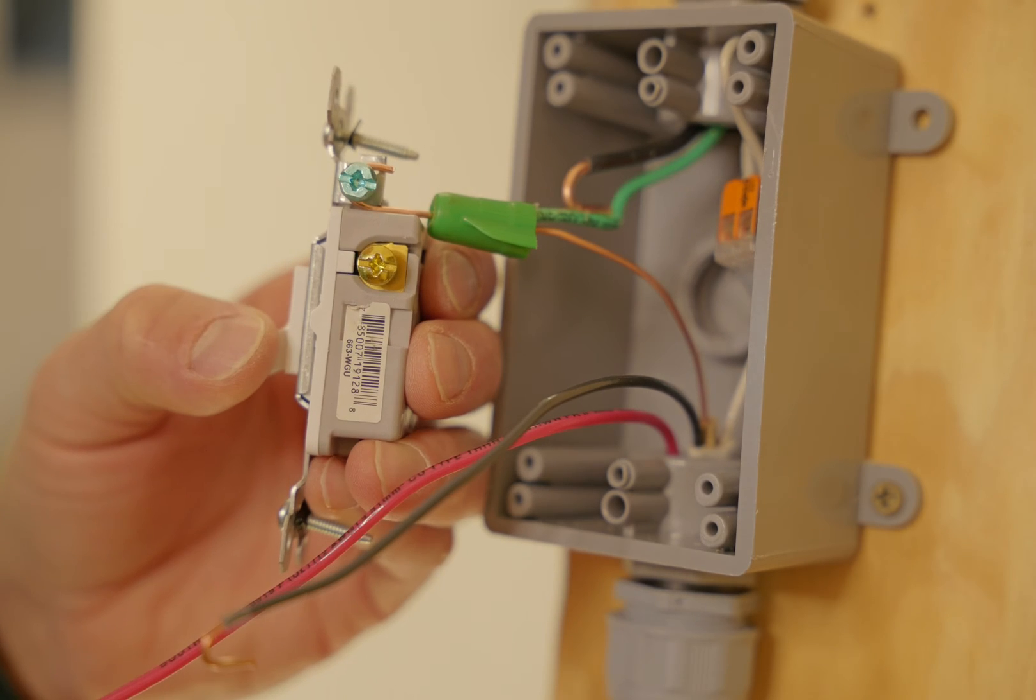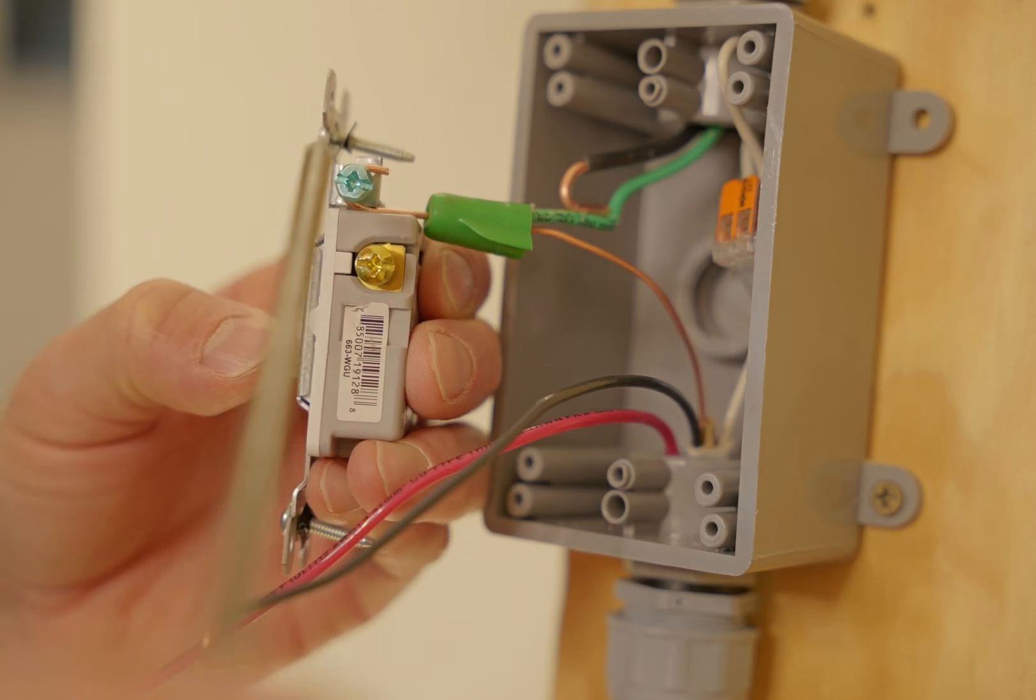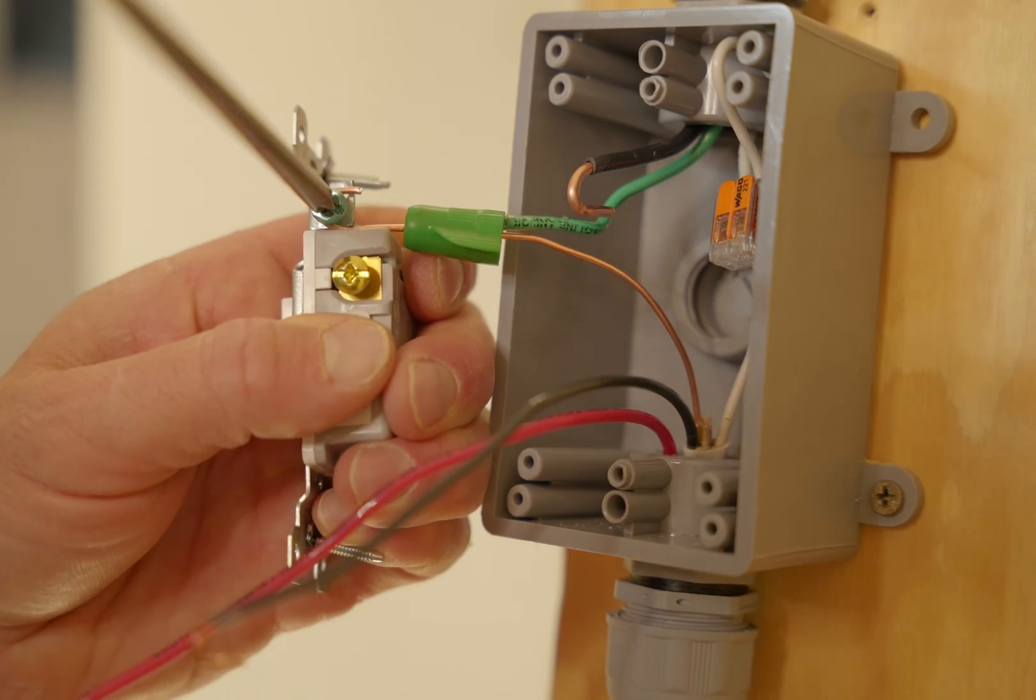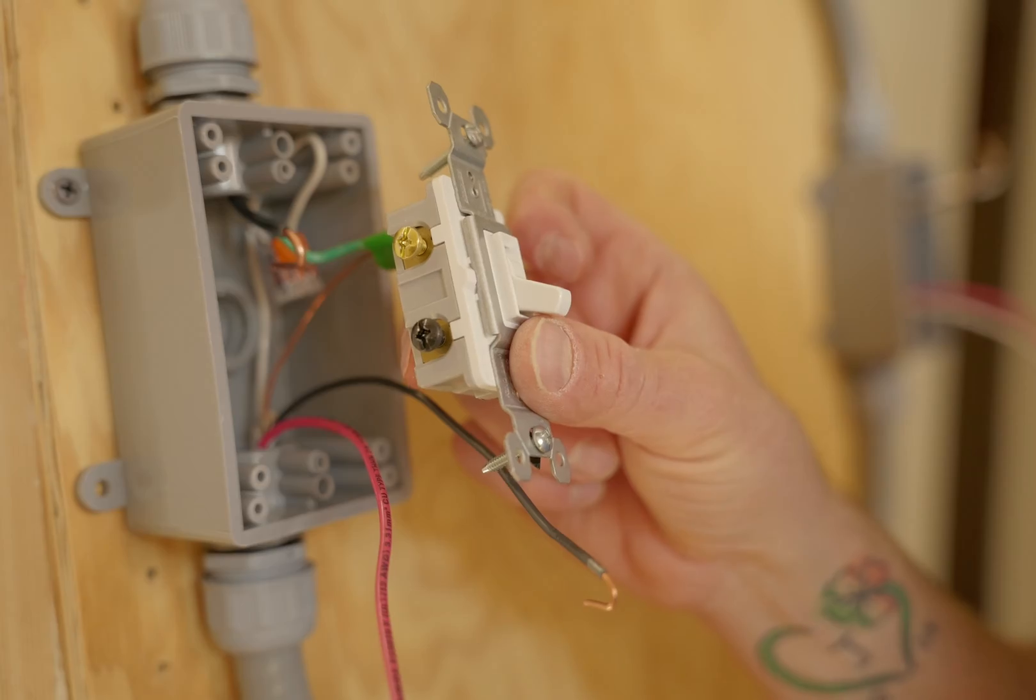Okay, now that we've got our ground bonded, we're going to hook it up to the switch here. Obviously, the bare copper ground wire goes on the green.